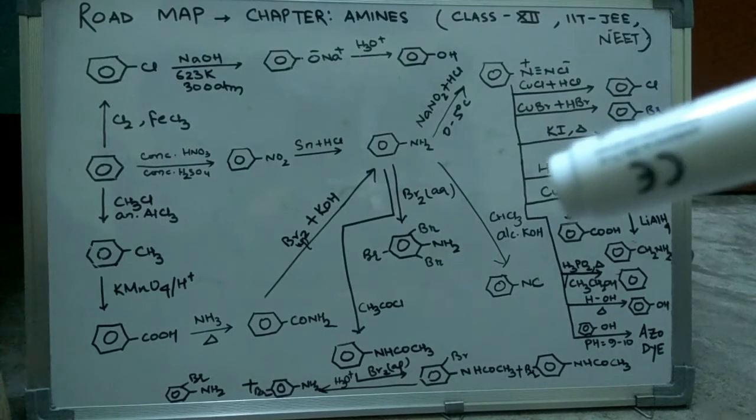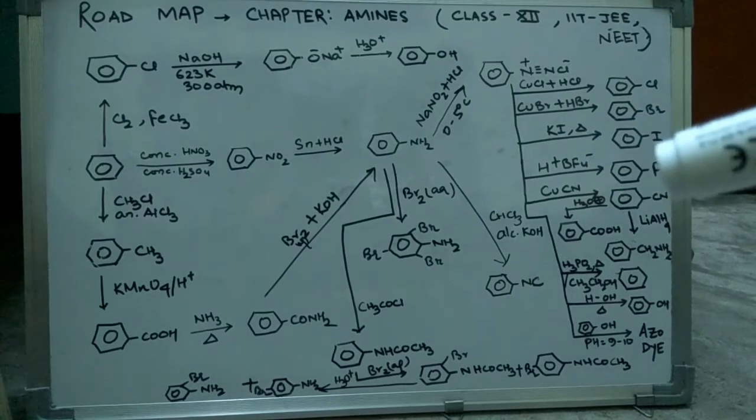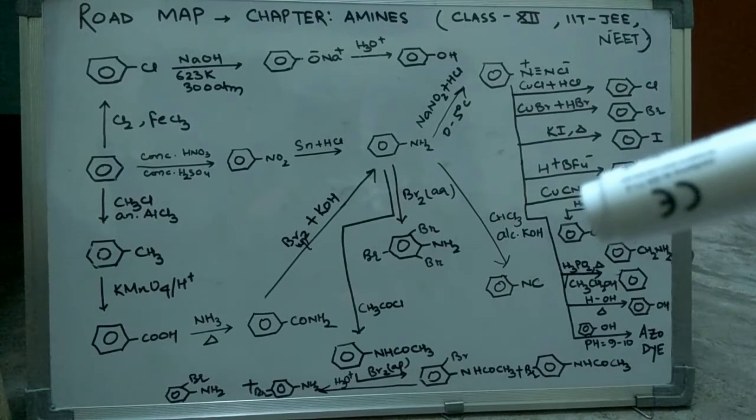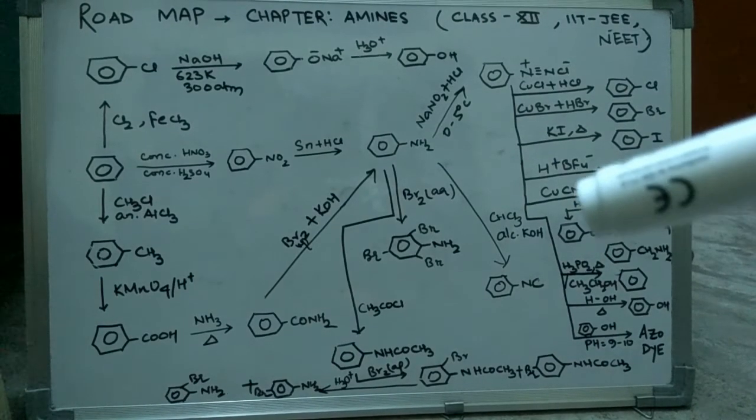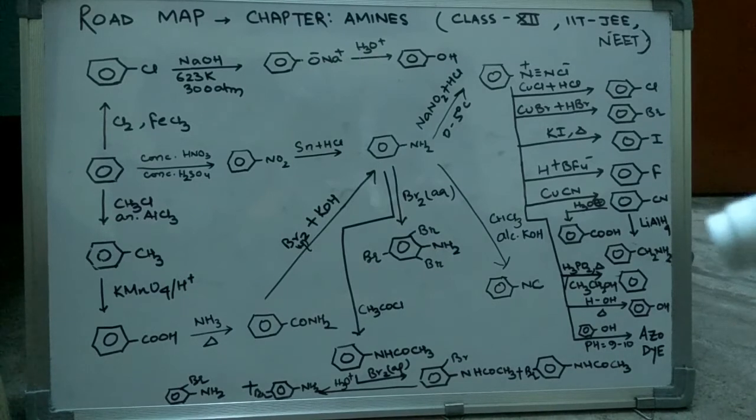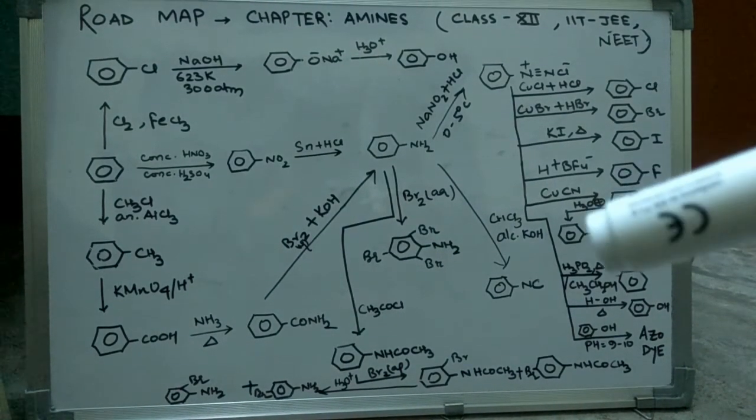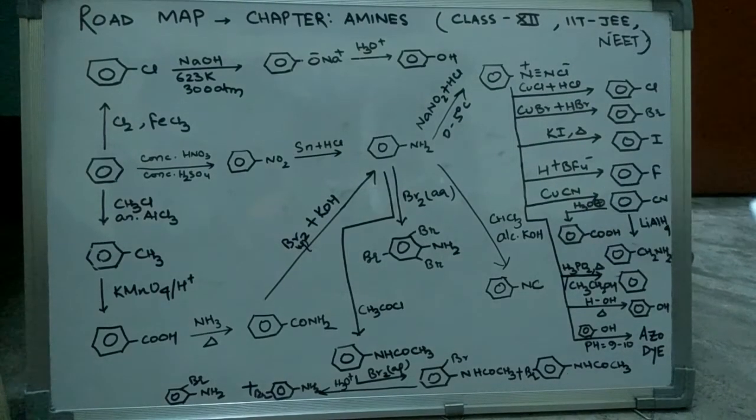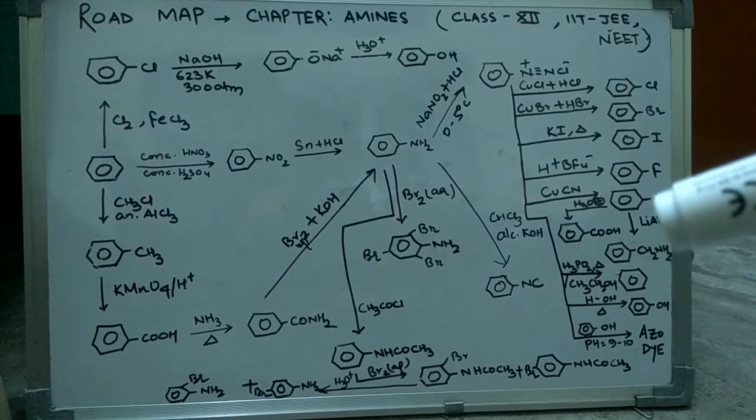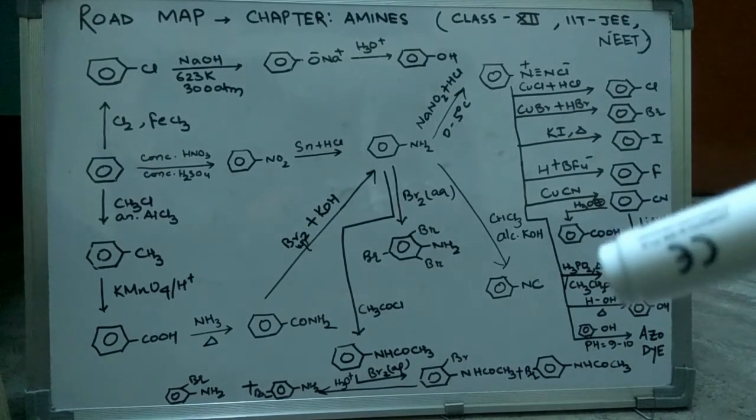Then we give KI and heat it up, so we get iodobenzene. We can apply HBF4, which gives us fluorobenzene. Next, we can also apply CuCN to benzene diazonium chloride, which gives us benzene linked with CN.